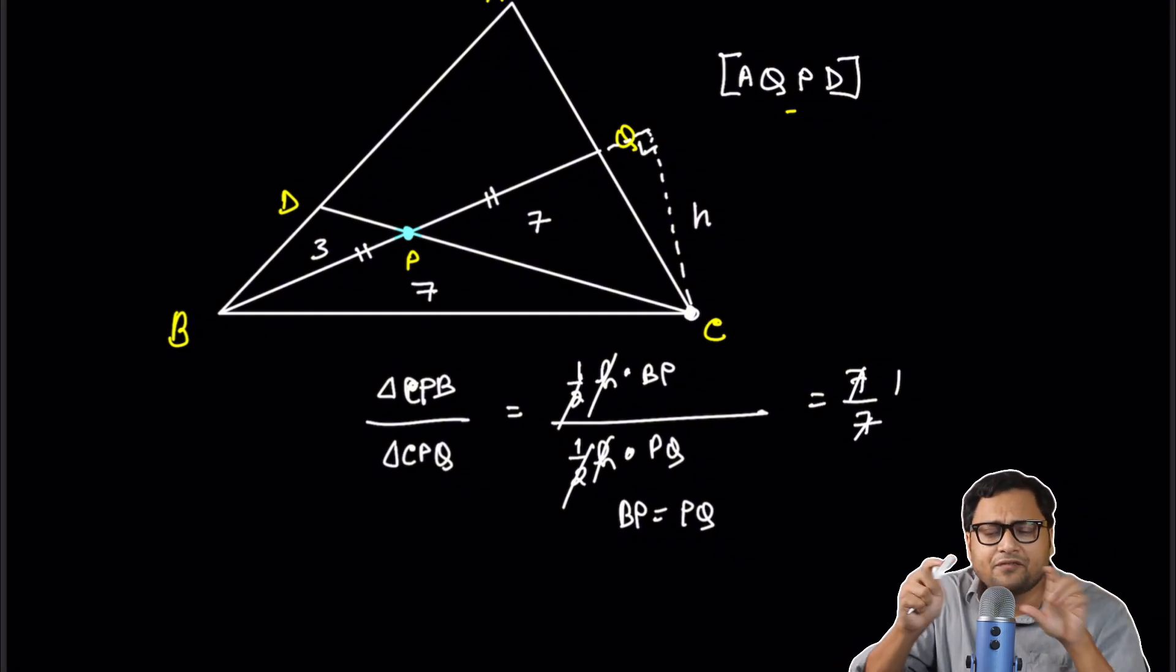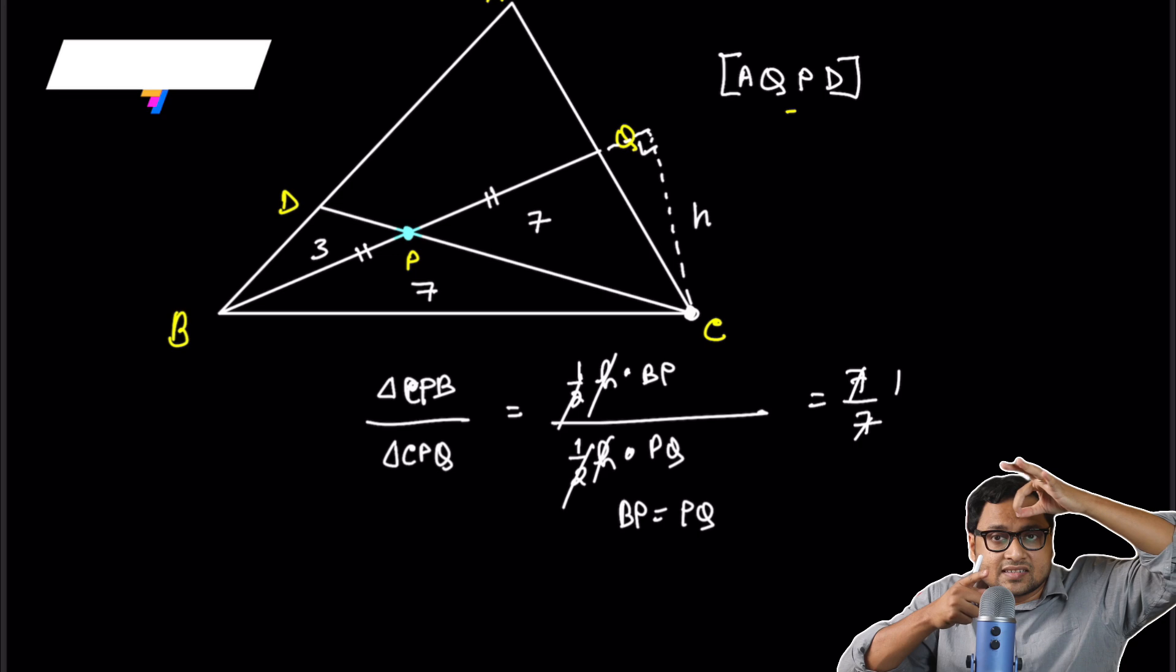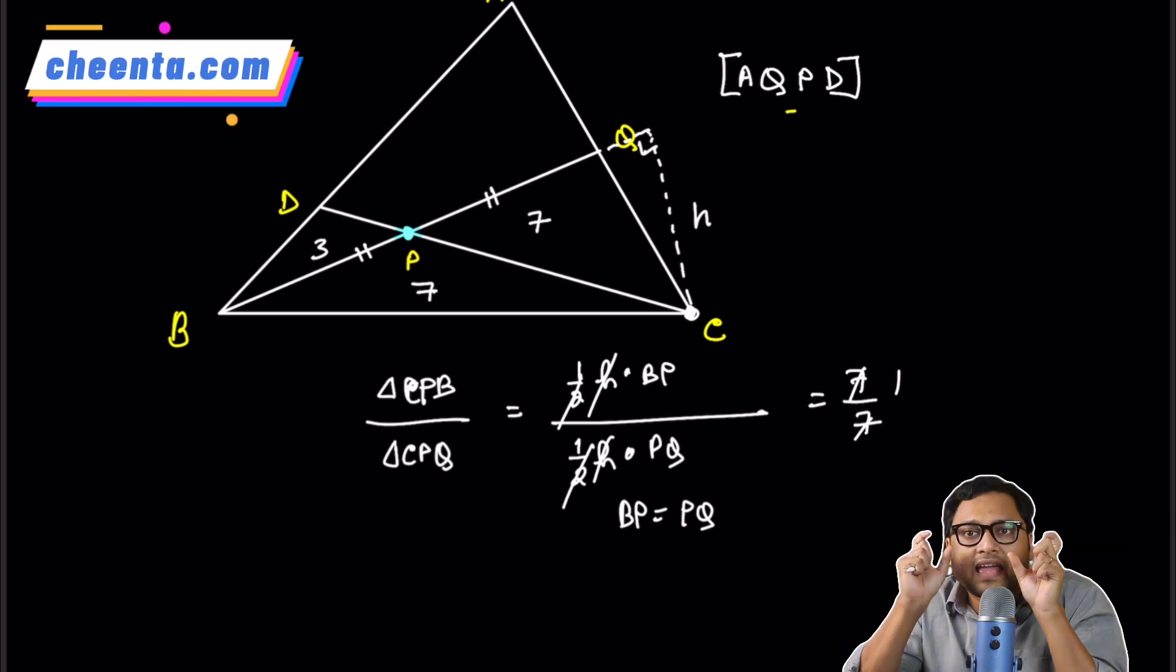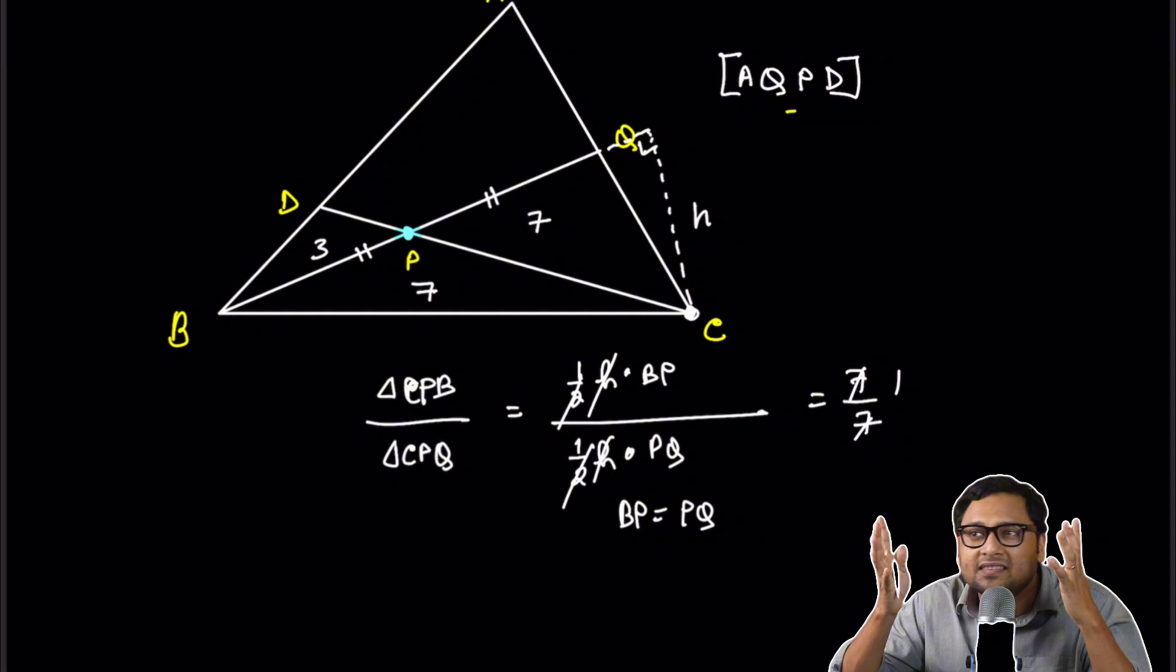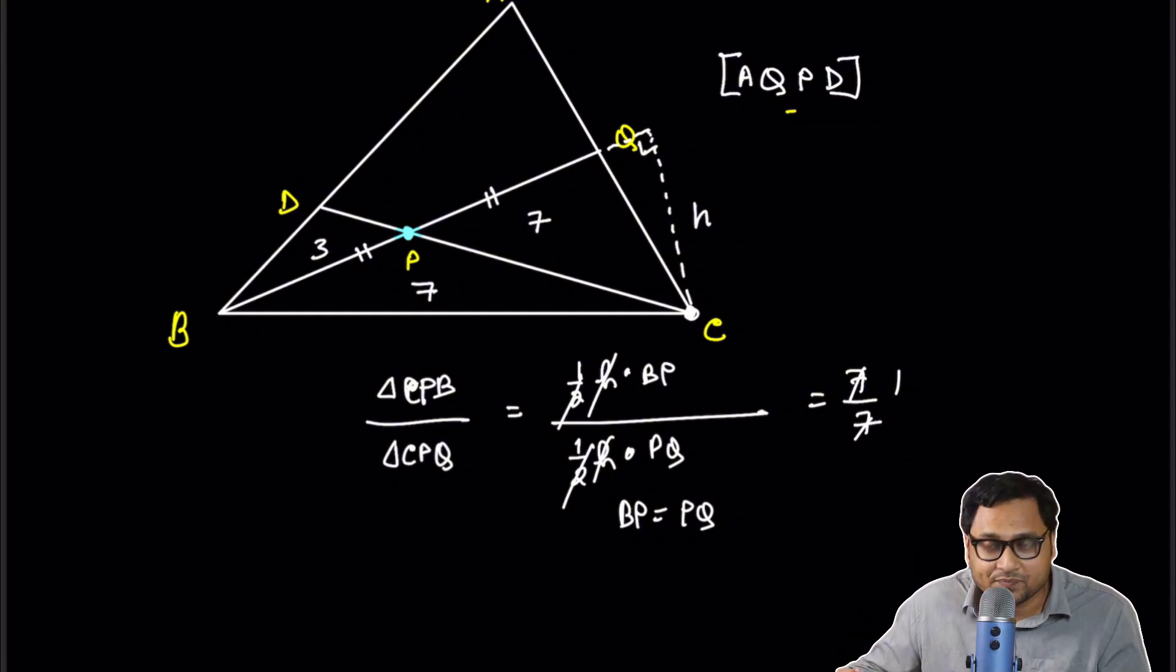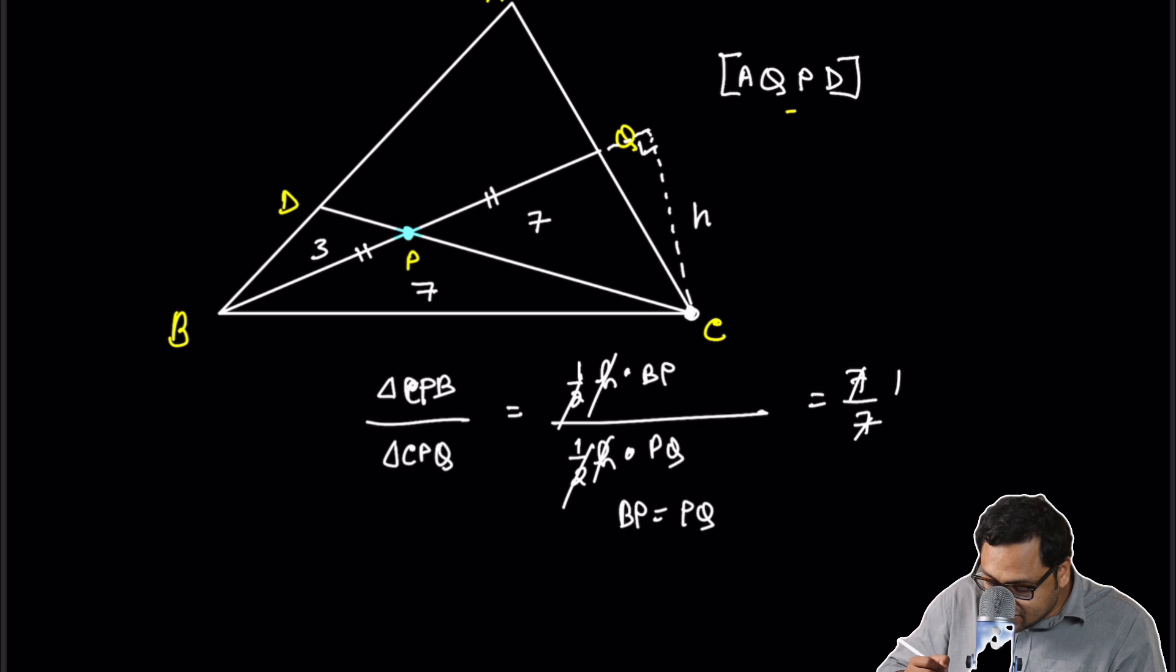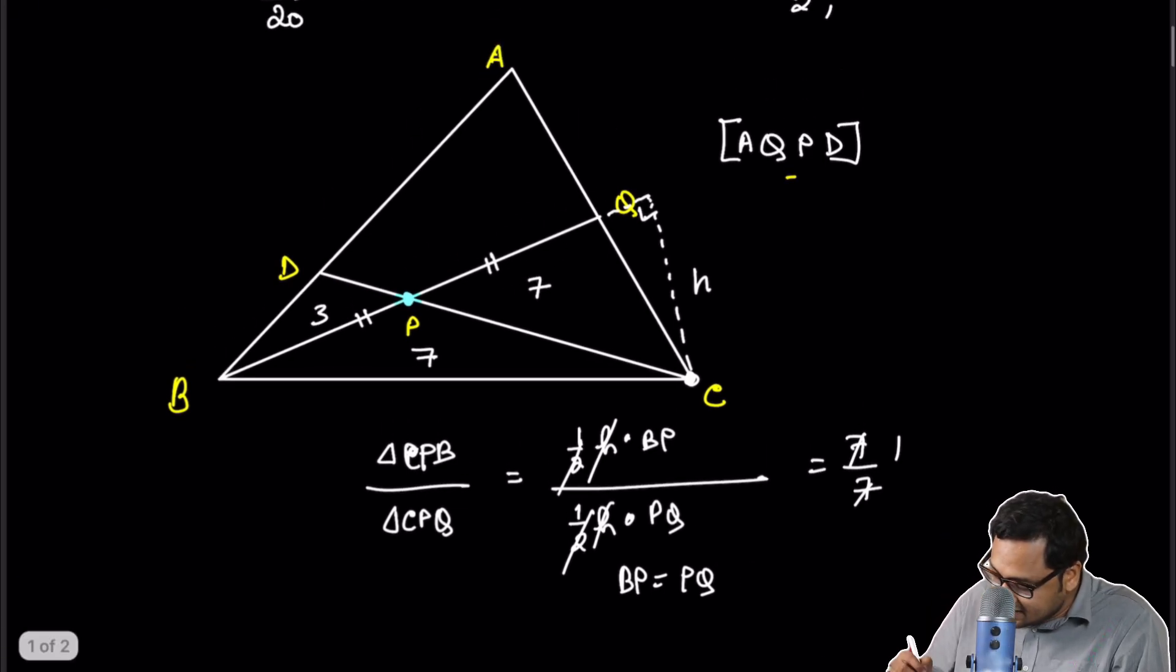This is a general principle. If two triangles are coming out from the same vertices and if they have the same area, then their bases will be the same. You can keep this in mind as a general principle, but you should also know why this works.